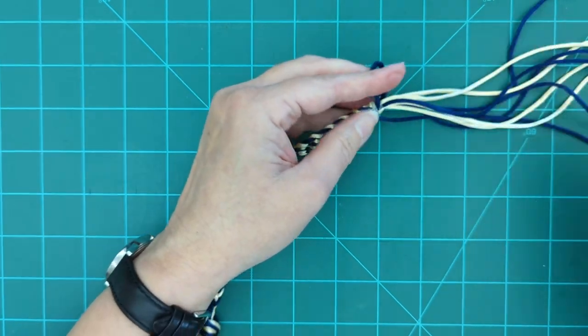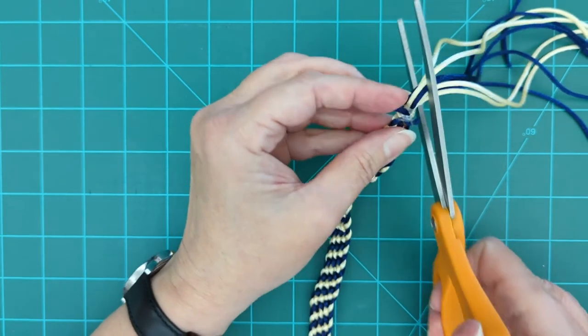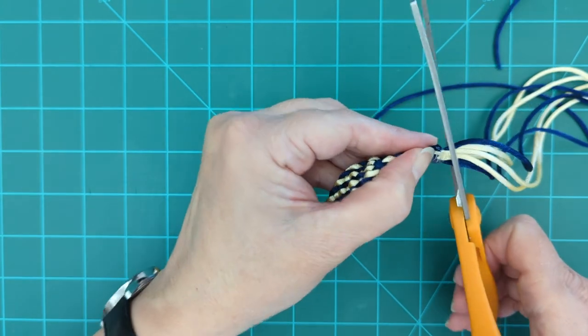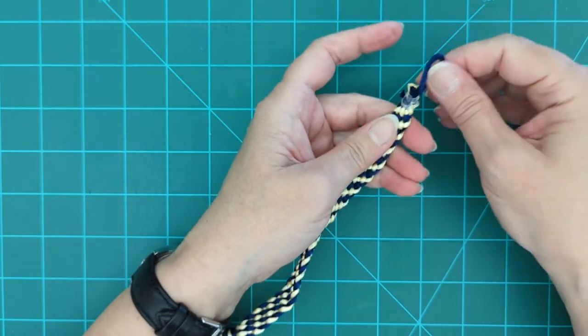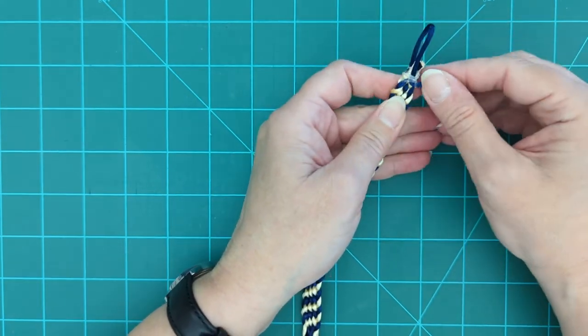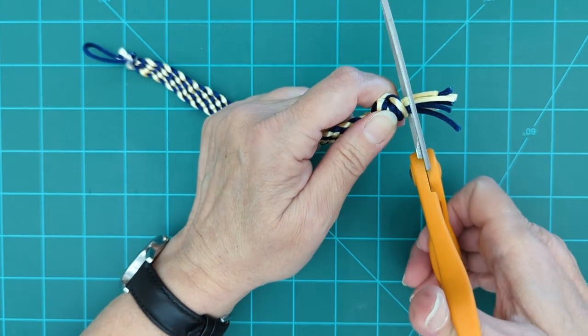Then I'm just going to trim all of these off fairly low down. So I have my loop with my rubber band at one end. I have my knot at the other end. And then I'm going to trim this end as well.